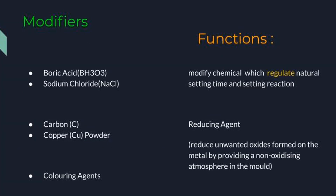Finally, modifiers. These can be: one, boric acid; two, sodium chloride; three, carbon; four, copper powder; five, coloring agent. Boric acid and sodium chloride modify the chemical nature, which regulates setting time and setting reaction. Carbon and copper powder are reducing agents — they reduce unwanted oxides formed on the metal by providing a non-oxidizing atmosphere in the mold.